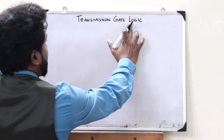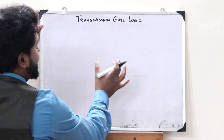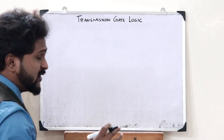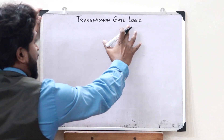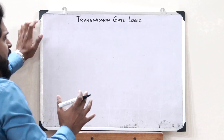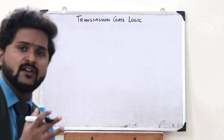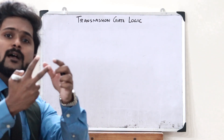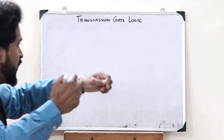Transmission gate logic — just like the name suggests, this is basically a logic that we implement, and this is a CMOS logic. In the case of a CMOS circuit, we know that we have two components: a PMOS transistor and an NMOS transistor.